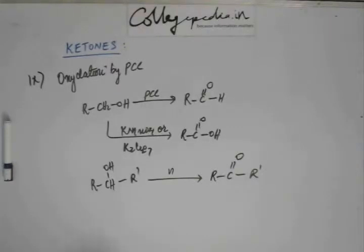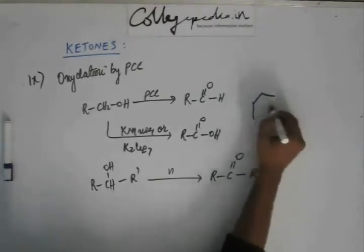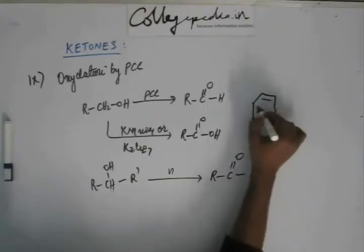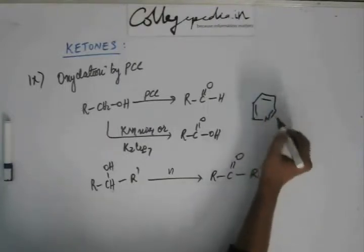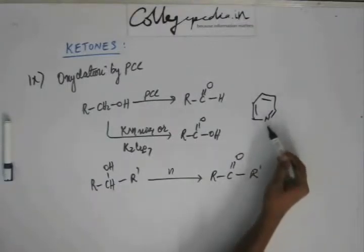Now let's see what PCC is. PCC is pyridinium chlorochromate. This is pyridine. This we studied when we studied resonance. When we were very young and we just started studying organic chemistry, I introduced this substance to you and this is called pyridine.